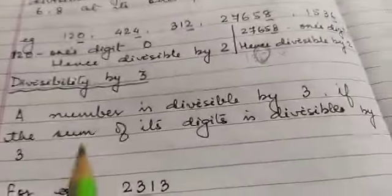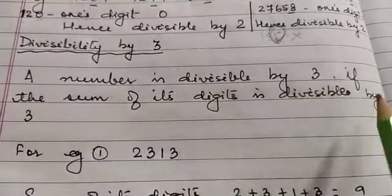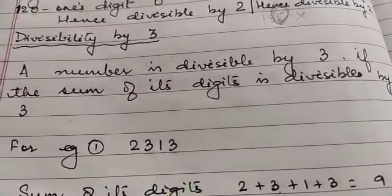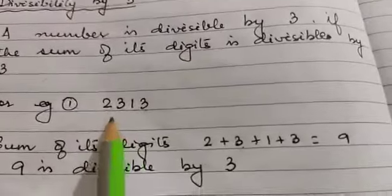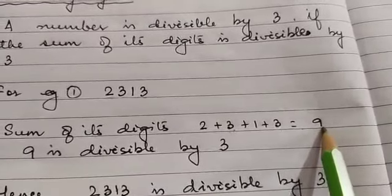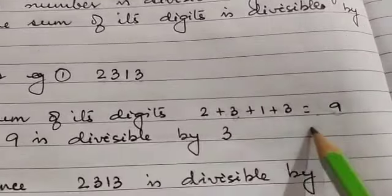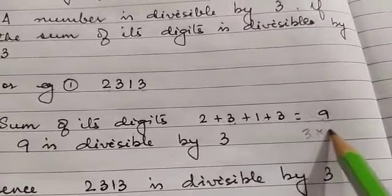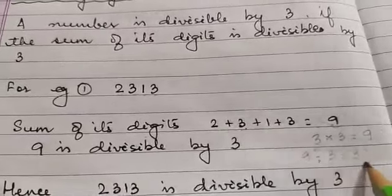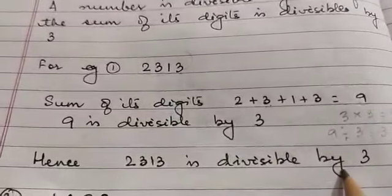Coming to divisibility by 3: a number is divisible by 3 if the sum of its digits is divisible by 3. Take for example 2313. The sum of the digits is 2 + 3 + 1 + 3 = 9. Since 9 is divisible by 3 (3 × 3 = 9), the whole number 2313 is divisible by 3.